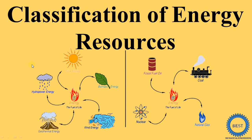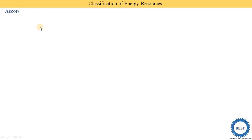In this video I explain the classification of energy resources. The first classification is according to usability of energy, and according to usability of energy there are three types: first is primary sources, second is intermediate, and the third one is secondary resources.